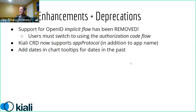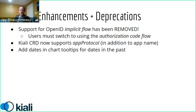Notable enhancements and deprecations: we are removing the implicit flow for OpenID in the next release — this was deprecated a few sprints back, so if you're using that flow, you need to switch to the authorization code flow now if you want to continue with Kiali updates starting with v1.63. Additionally, the Kiali CRD now supports app protocol, requested by a community user. We also added a chart tooltip enhancement — on Sparkline charts and metric pages for workload, app, or service detail, if you're hovering and the data is not from today, the date will be displayed.